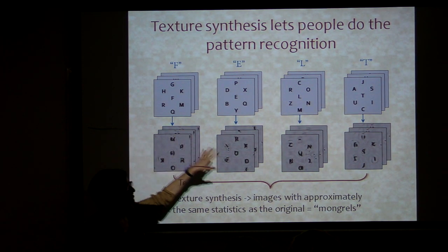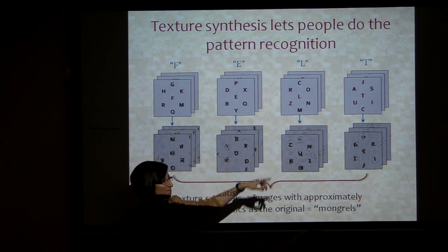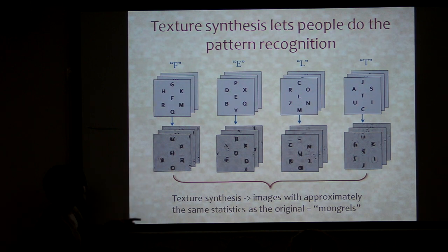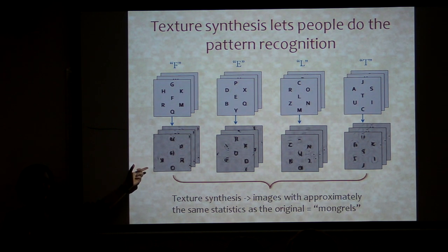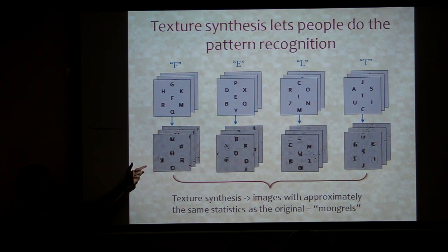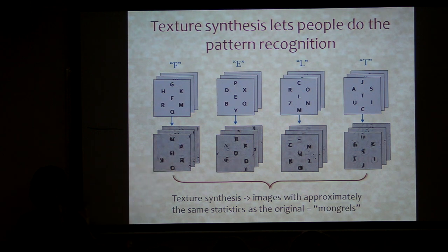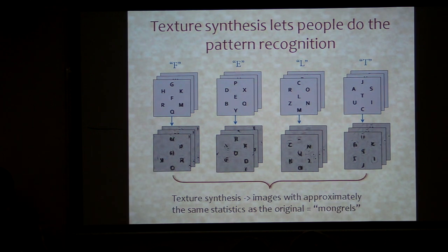The trick is that we once again go back to the texture synthesis roots of this whole thing. For each of the original images, we're going to generate a number of synthesized images — mongrels — that have approximately the same summary statistics as the original. We do that for each of the four sets, then actually have people look at them and try to tell you which target category each originally had, giving us a measure of how discriminable those four sets are.